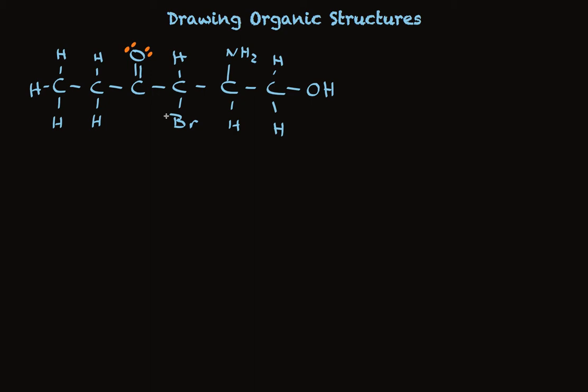This bromine has three unshared pairs. The nitrogen has one, and here's another oxygen, and look, it has two unshared pairs. You'll see a pattern here. Nitrogen typically will have one unshared pair in a stable neutral molecule. Oxygen will have two, and a halogen will have three.